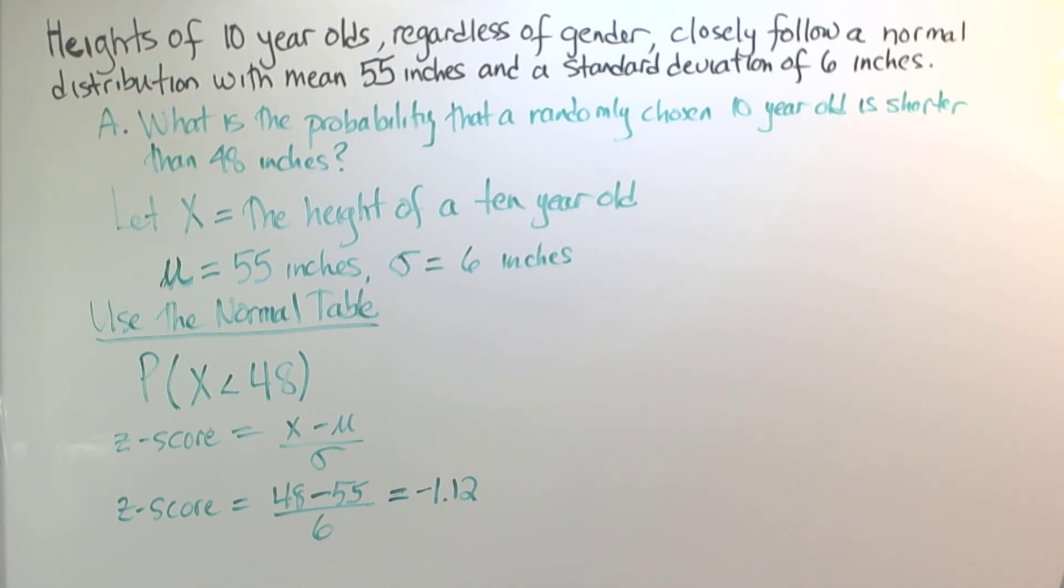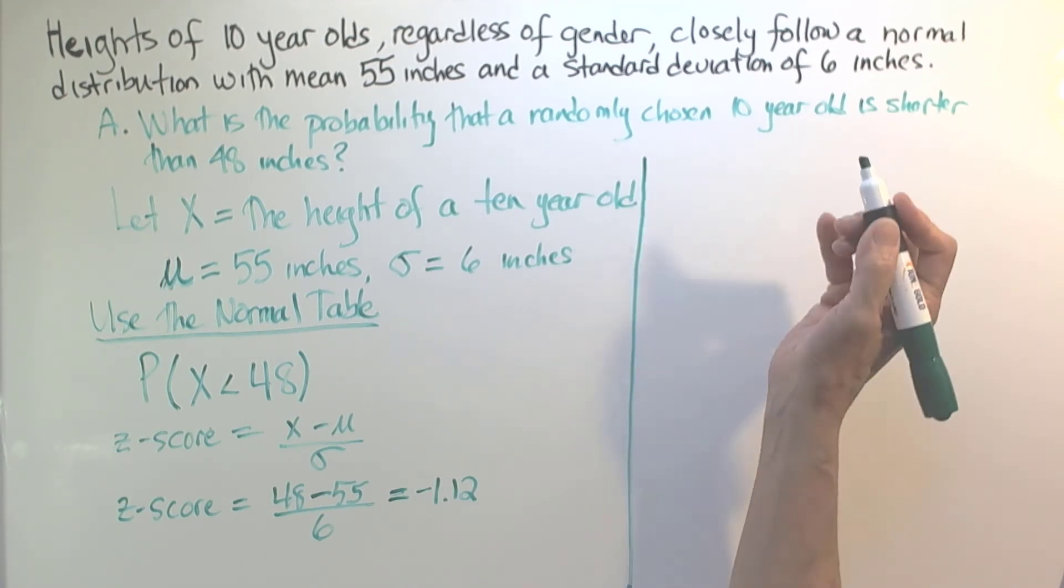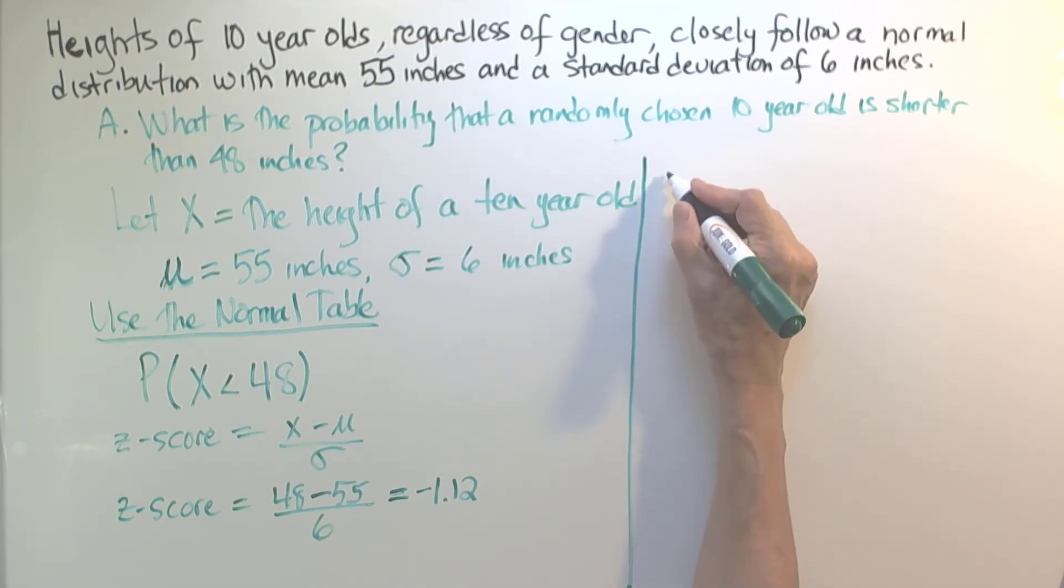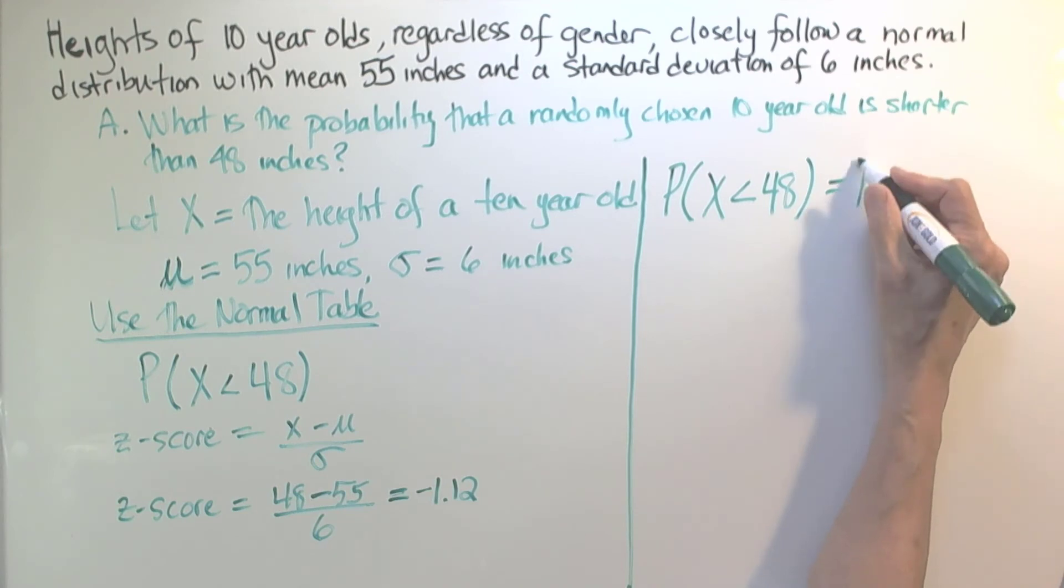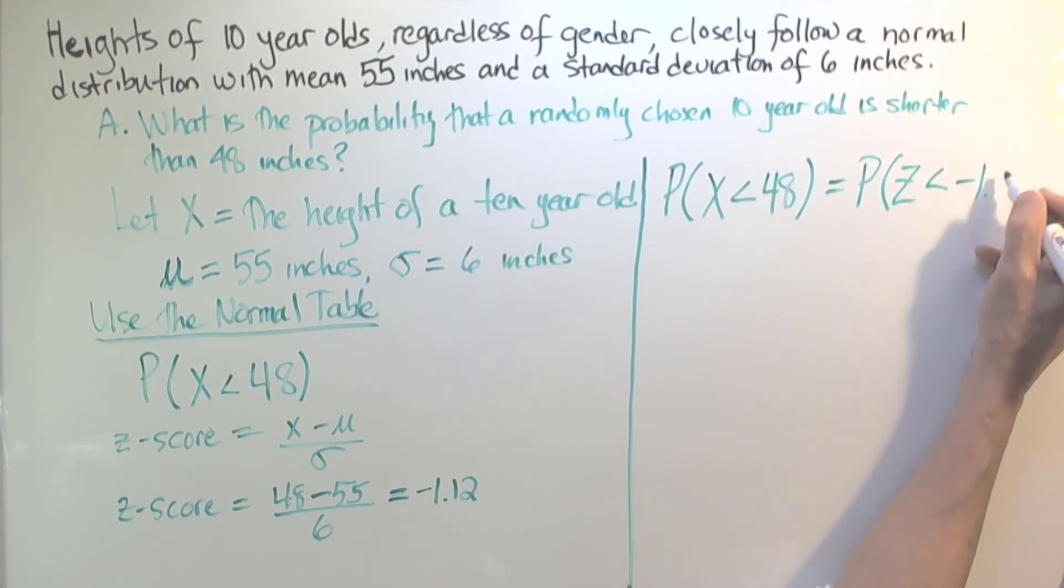Now we'll go over and continue over here. Notationally, it's a good idea to work with our z-score. So the probability that we're trying to find, that the height of a 10 year old is less than 48, is equal to the probability that z is less than negative 1.12.